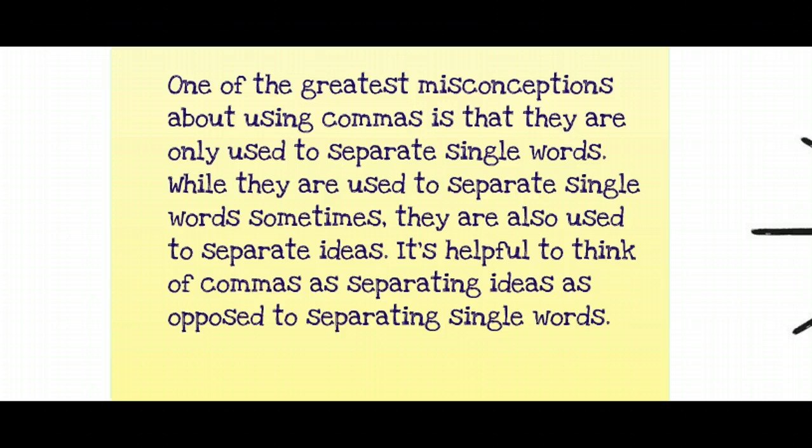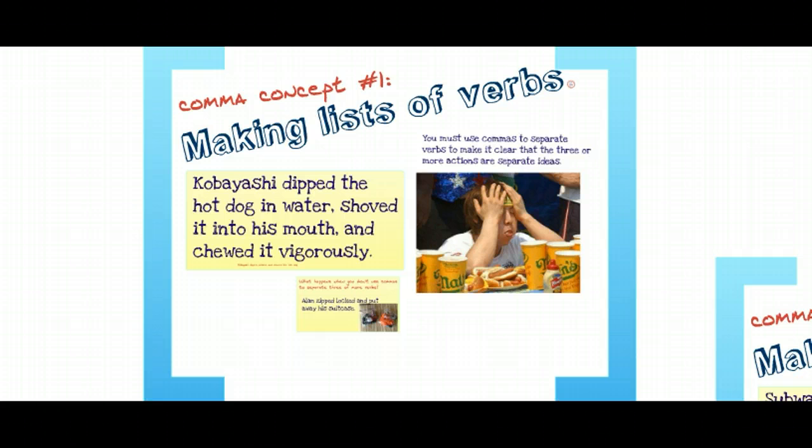There are three basic types of lists in which we use commas to separate ideas: verbs, nouns, and adjectives. Let's first take a look at verbs.